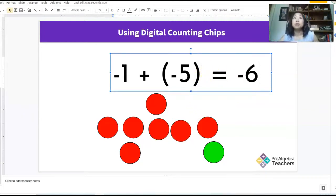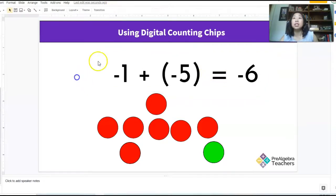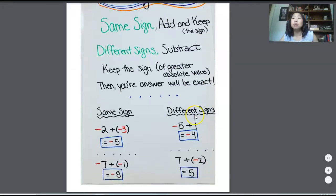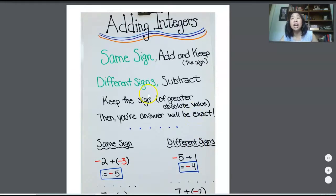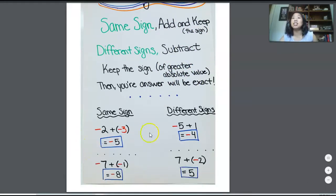So what I end up doing for my students is we talk about these patterns. We talk about the different rules and I will have this anchor chart hanging up in my classroom with it being same sign, we're going to add and keep the sign. If they have different signs, we subtract. So we keep the sign of the greater absolute value. And then my answer is going to be exact. I have some examples down here.